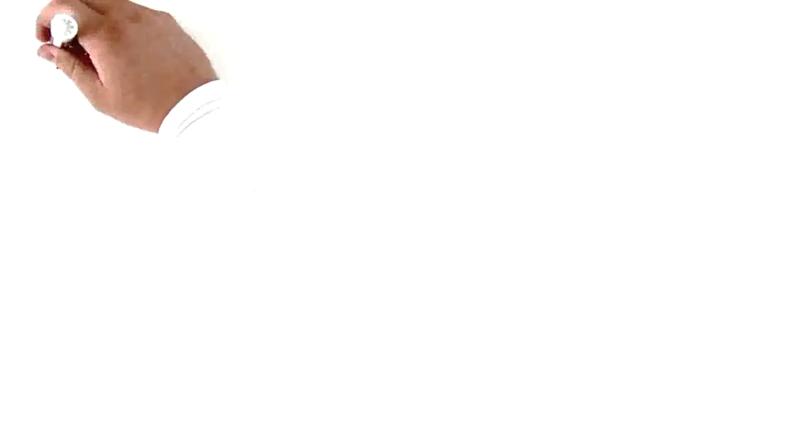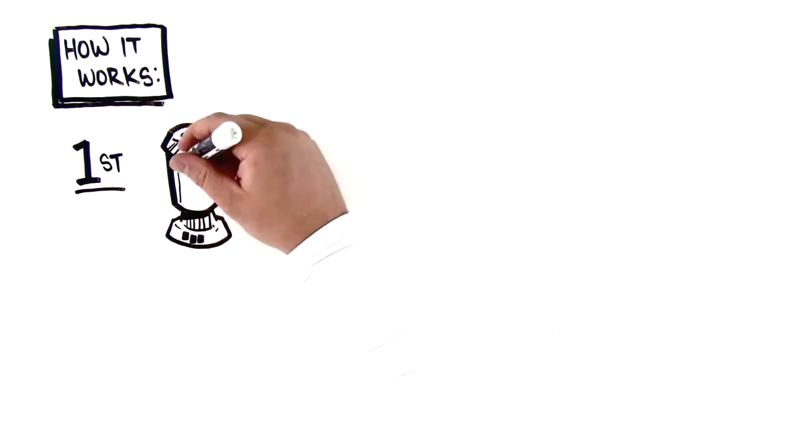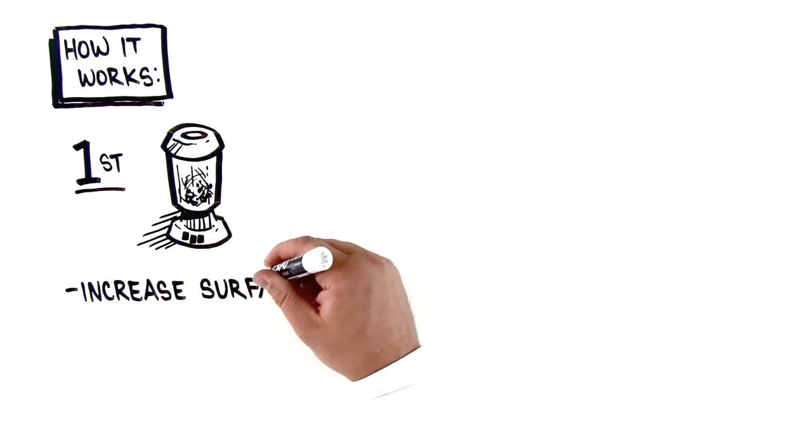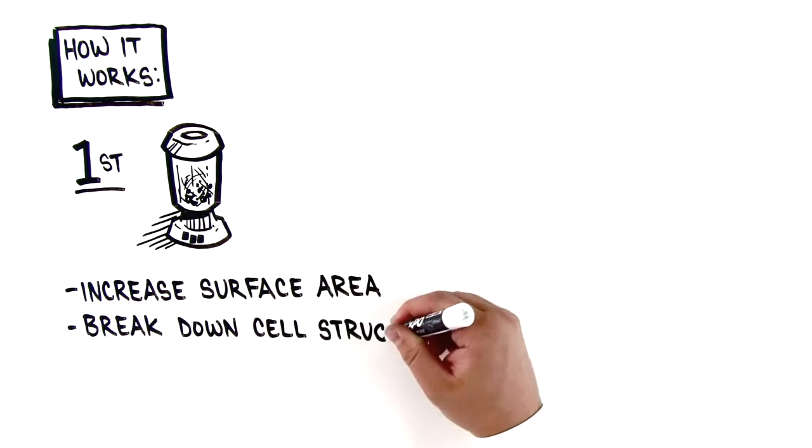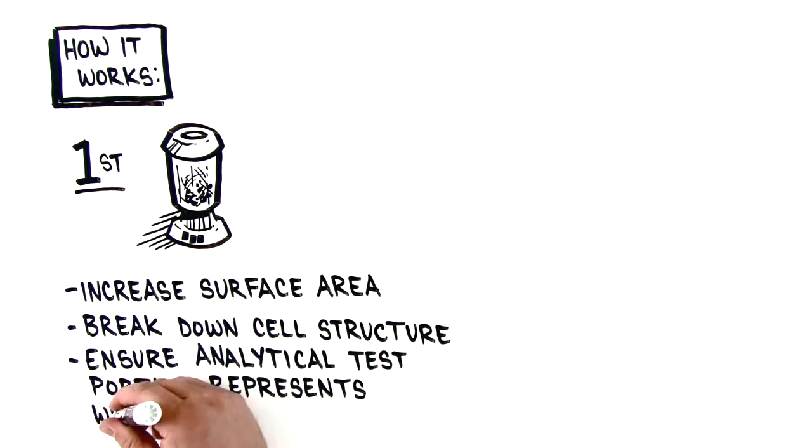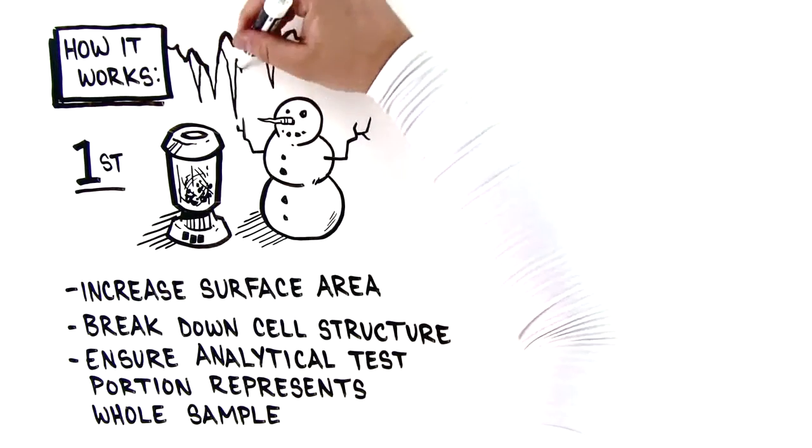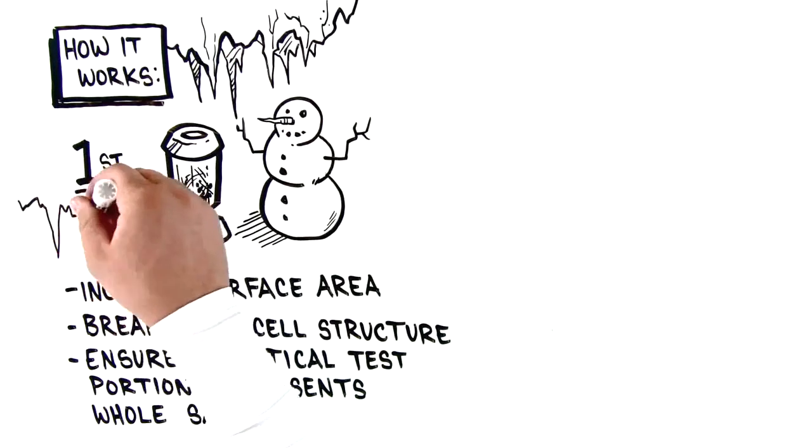Here's how QuEChERS works. First, homogenize the sample by grinding it as much as possible to increase surface area, break down cell structure, and ensure the analytical test portion is representative of the whole sample. It's often important to keep the sample cold to prevent analyte breakdown. Cryogenic milling is recommended.